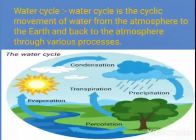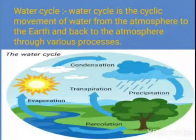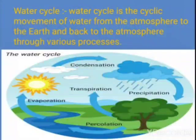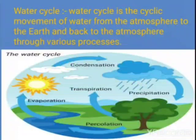The water that comes down as rain either evaporates and goes back up to form clouds again, or some rain water seeps underground, and some amount returns to the seas, oceans and rivers. Because of the sun's heat, it gets evaporated again and goes up to form clouds. This leads to the formation of a cycle known as the water cycle.